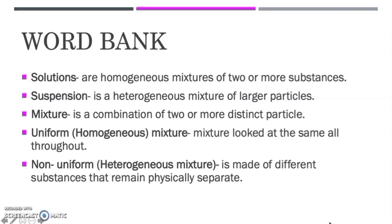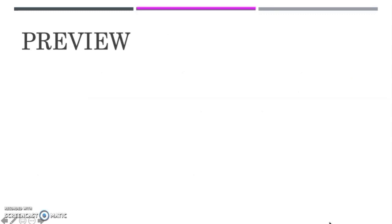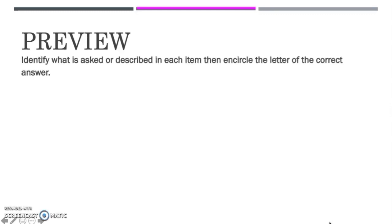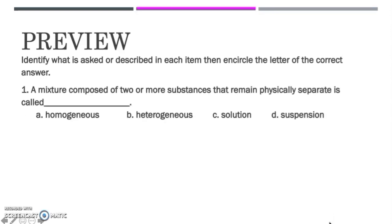Now, since you are already familiar with these words, let's check your prior knowledge about the topic by answering these preview questions. First question: A mixture composed of two or more substances that remain physically separate is called blank. A. Homogeneous, B. Heterogeneous, C. Solution, or D. Suspension.